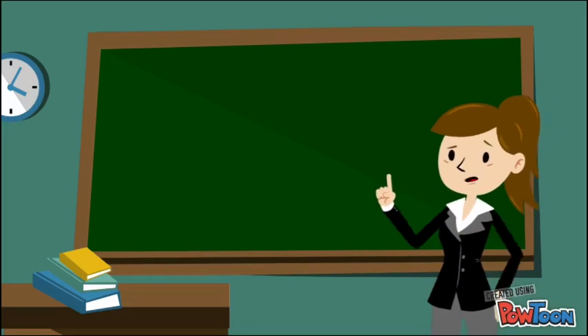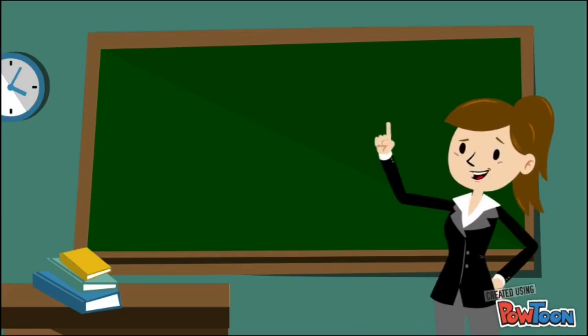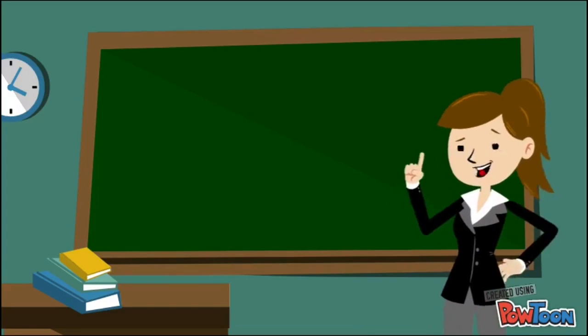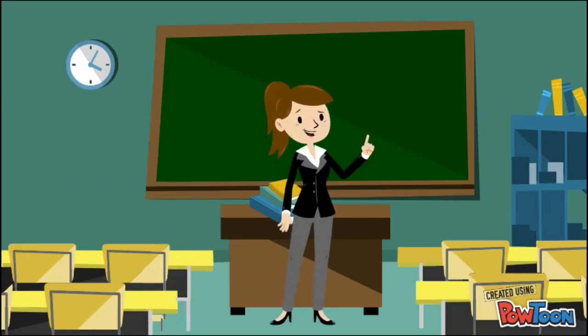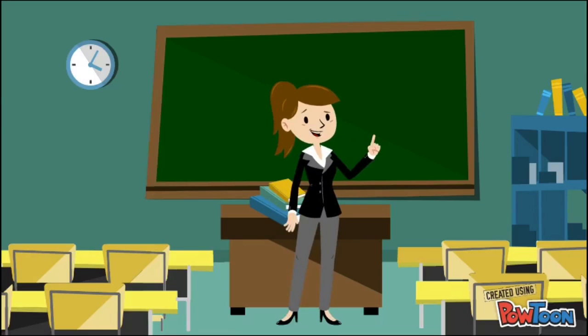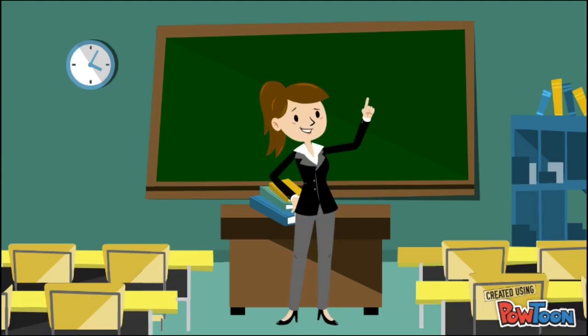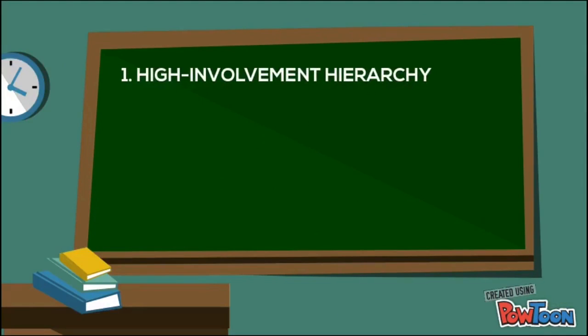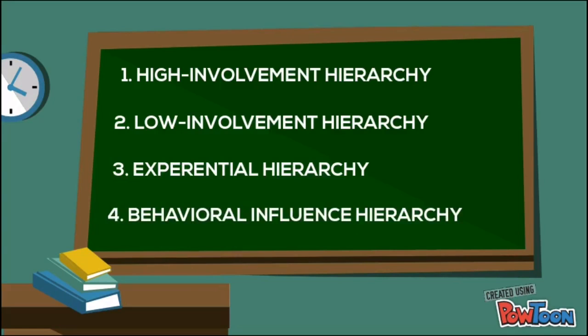As discussed earlier, the ABC approach to consumer attitudes suggests that there are three components to attitudes: affect, behavior, and cognition. Research indicates that these components may be formed in a sequential pattern. This attitude formation is known as the hierarchy of effects approach. According to this approach, affect, behavior, and cognitions form by following one of four hierarchies: high-involvement hierarchy, low-involvement hierarchy, experiential hierarchy, and behavioral influence hierarchy.